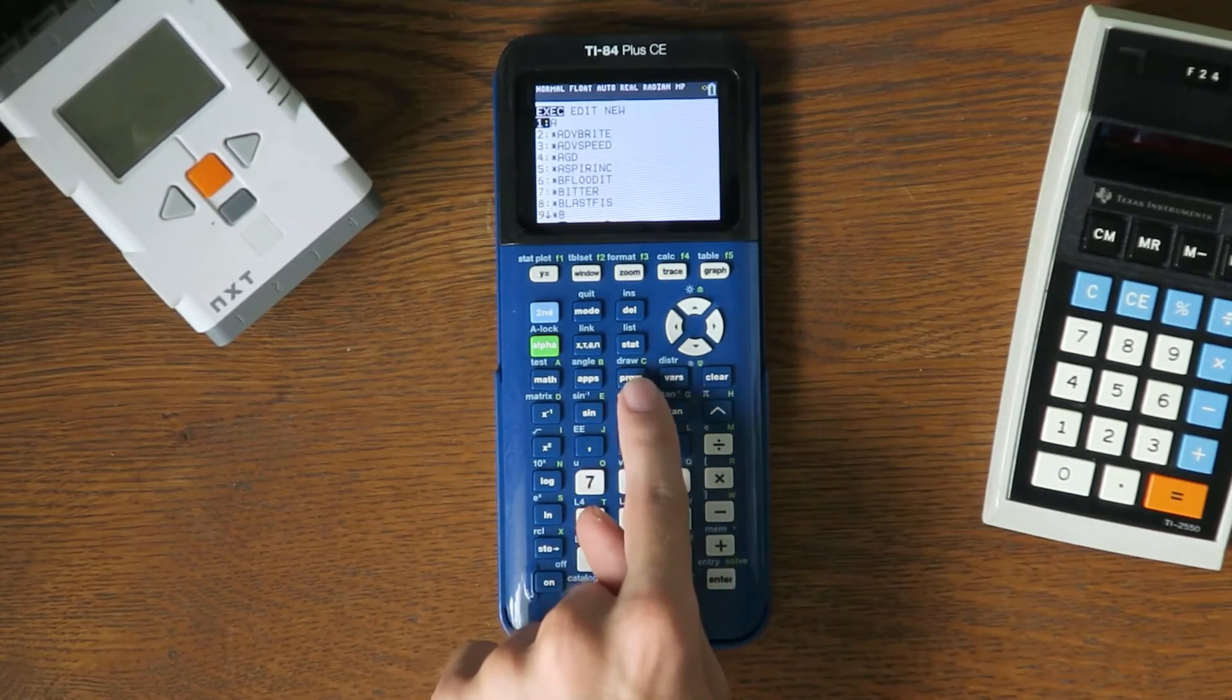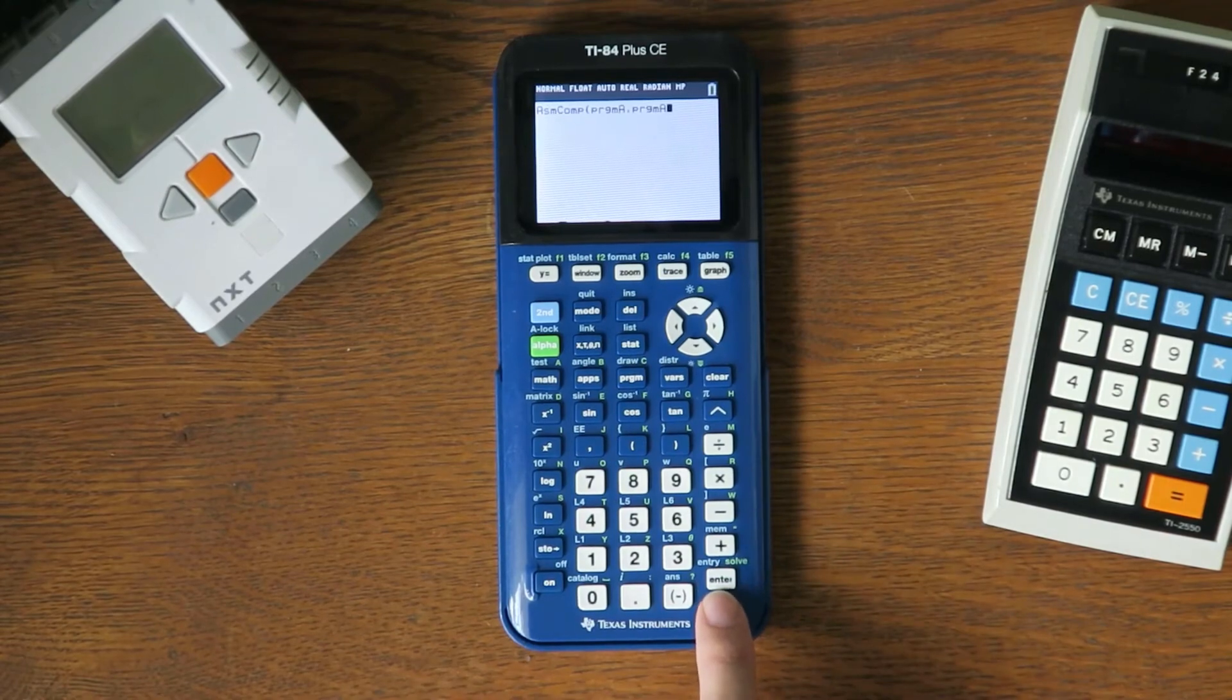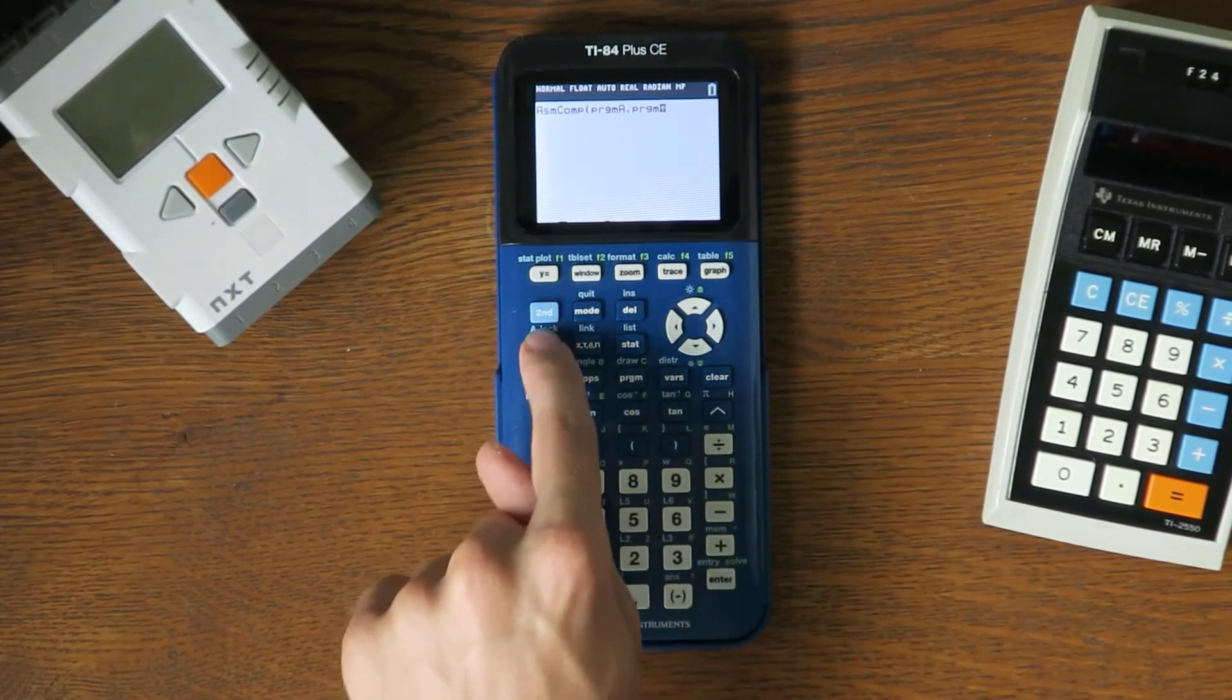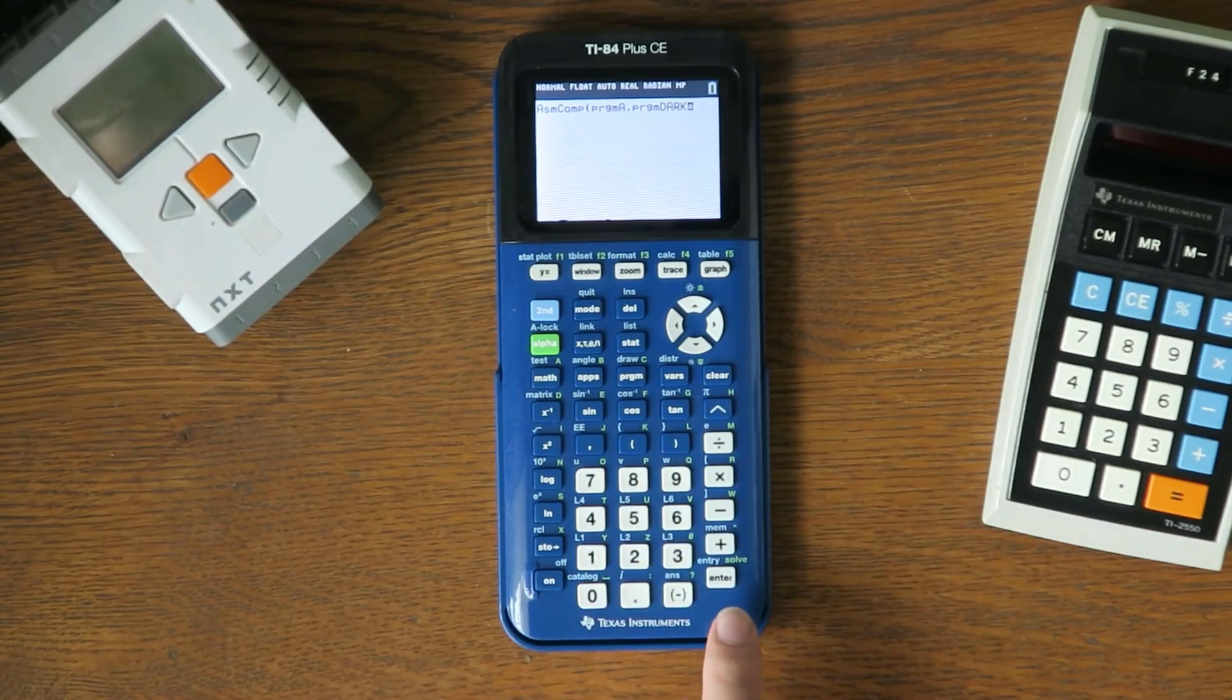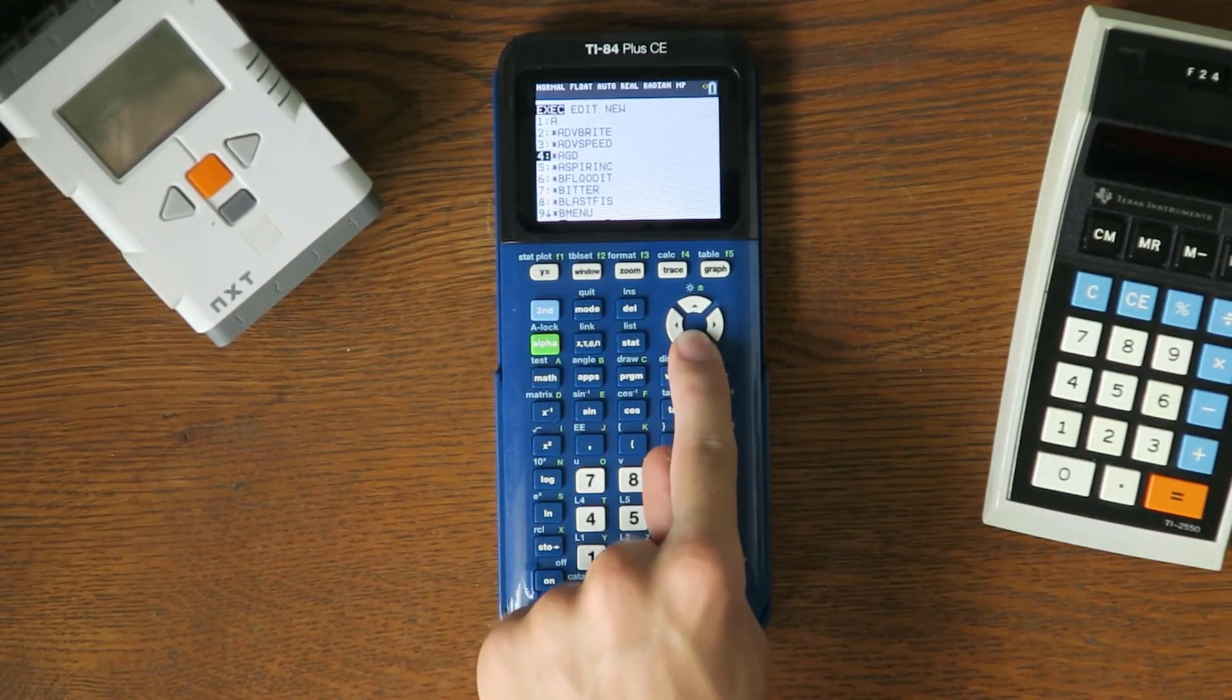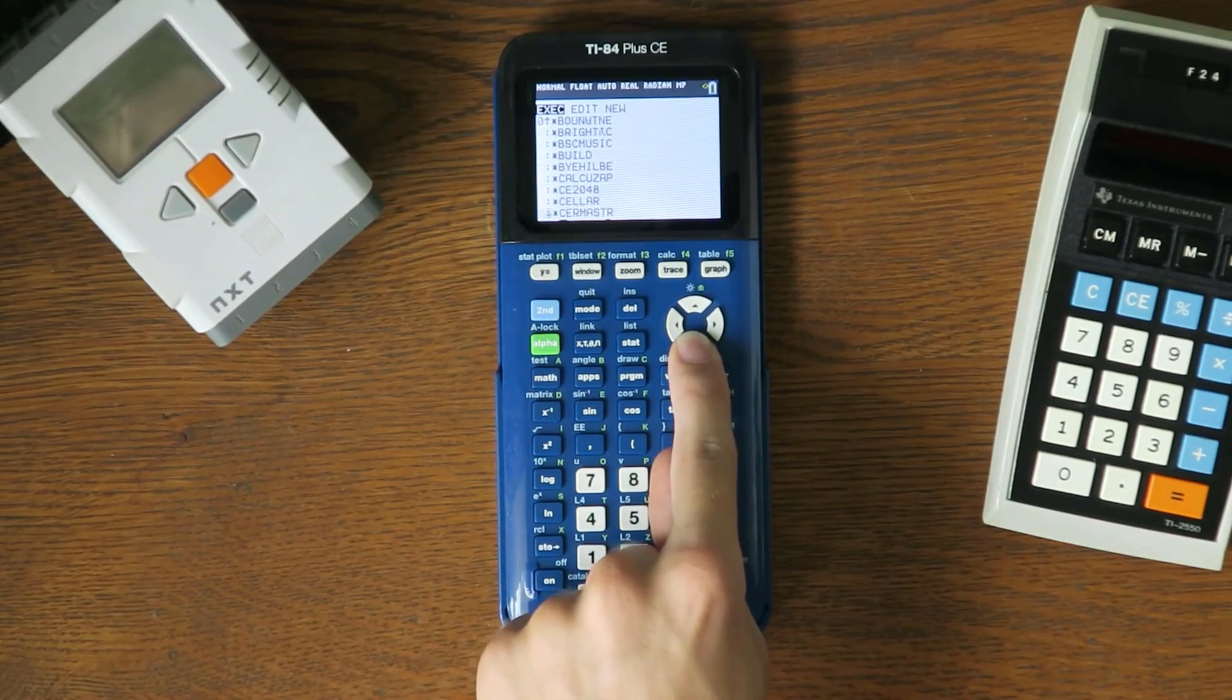This time you need to edit the name of Program A to whatever you want. I'll be renaming it to Dark. Once you've renamed it, press Enter. Now press Program and select Program Dark, then press Enter until it runs.